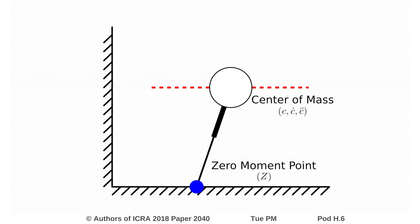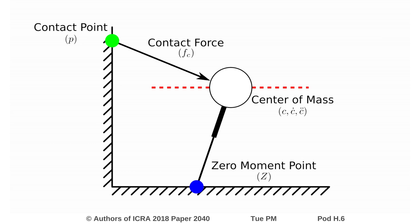When this framework is extended to use external contacts, the timing and locations of the contacts are traditionally predetermined. Additionally, by including an external force, the dynamics of the MPC become nonlinear and slower to solve. In this work, we present a two-stage optimization that retains a linear form and is able to determine both the external contact location and the force trajectory in an online manner.